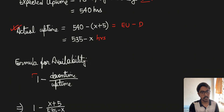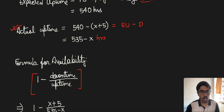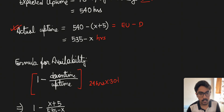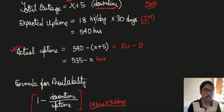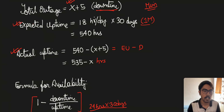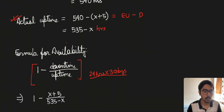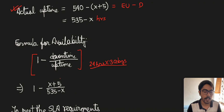Availability is defined as 1 minus (downtime divided by uptime). Some students confuse this, thinking uptime should be 24 hours into 30 days — but that is not the case. Uptime is calculated based on the amount of time the application is running inside the cloud, exactly the way discussed above.